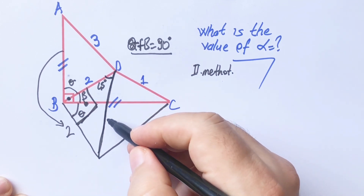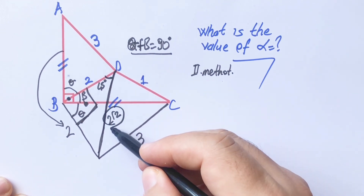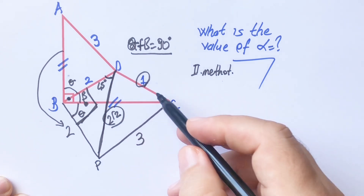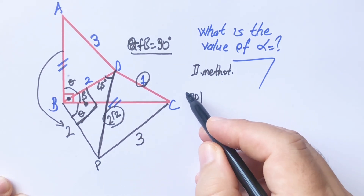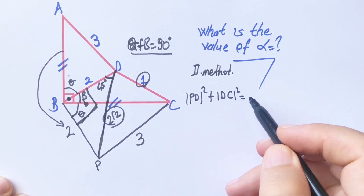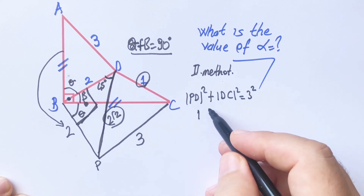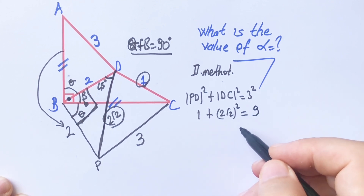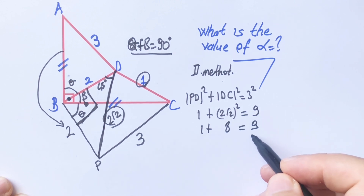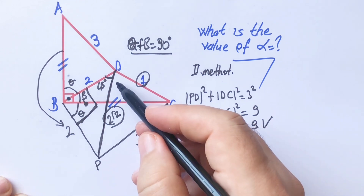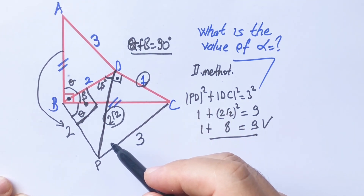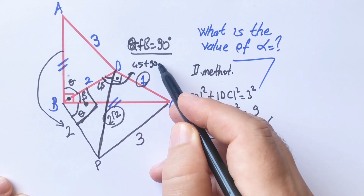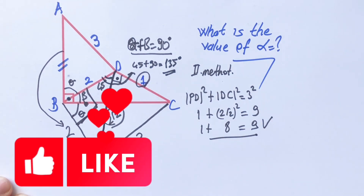The hypotenuse here is 2√2. If you notice that the side lengths of this triangle fit the Pythagorean theorem: 1² + (2√2)² = 1 + 8 = 9 = 3². So the sides satisfy the Pythagorean theorem, meaning this angle is 90 degrees. Therefore alpha = 45° + 90° = 135 degrees.